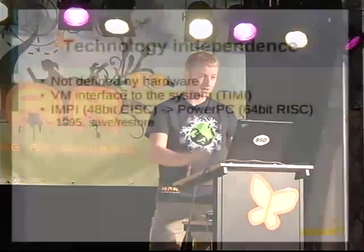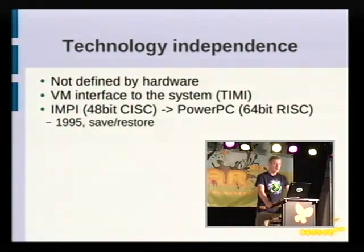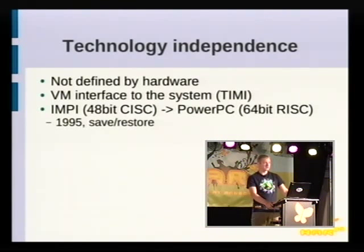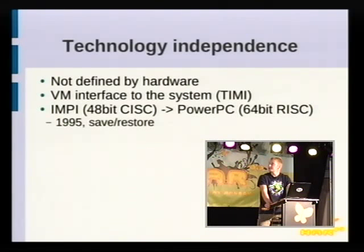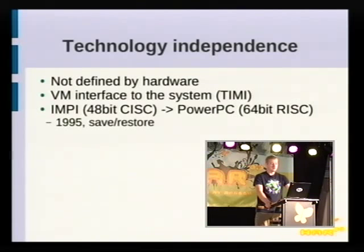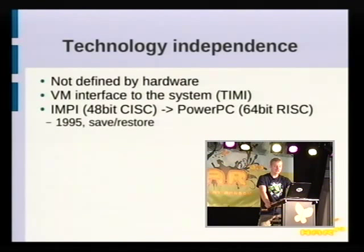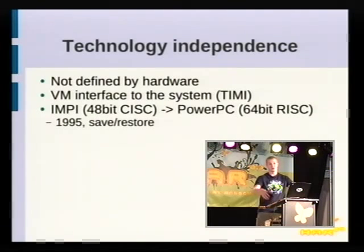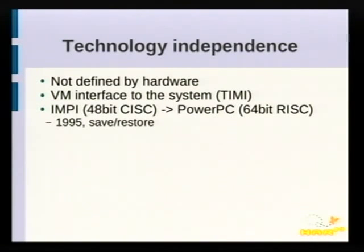The first principle is technology independence. IBMi is not defined by hardware — it talks to a virtual machine interface called the Technology Independent Machine Interface (TIMI). This independence was demonstrated in 1995 when the system moved from 48-bit CISC to 64-bit RISC; customers could just save their programs on the old system, restore them on the new one, and they would just work.